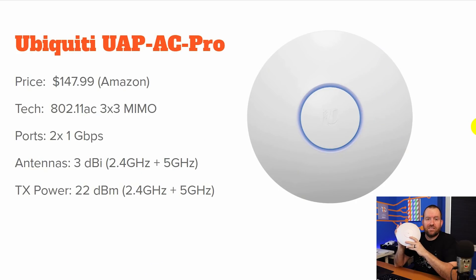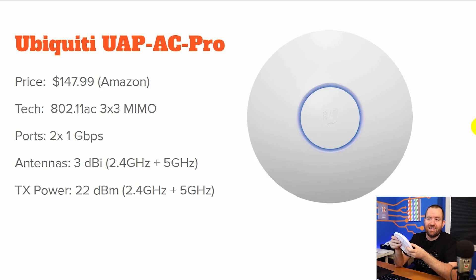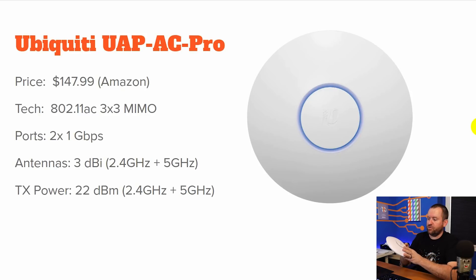This is a 3x3 MIMO 802.11ac — that's Wi-Fi 5 — access point. The UAP-AC Pro has two one-gigabit Ethernet ports, and for the antenna configuration, it's got a 3 dBi antenna in both the 2.4 and 5 GHz spectrum, with a transmit power of 22 dBm in both of those spectrums.